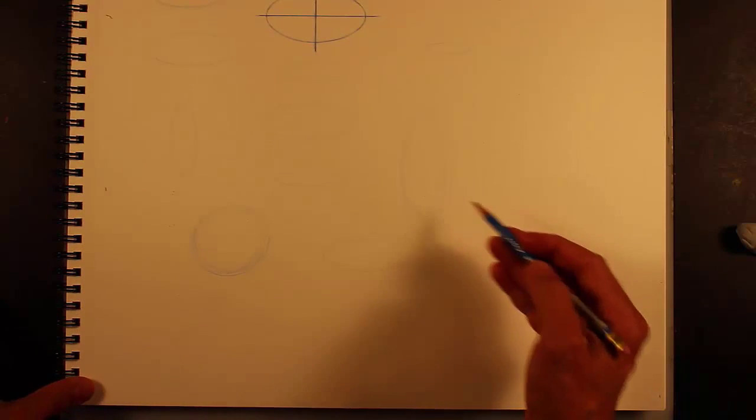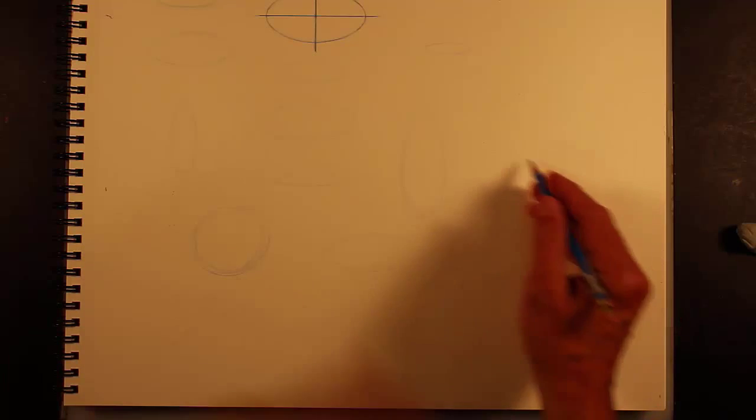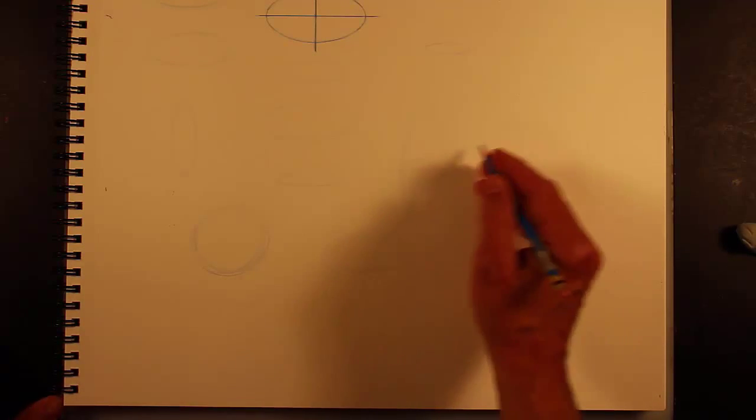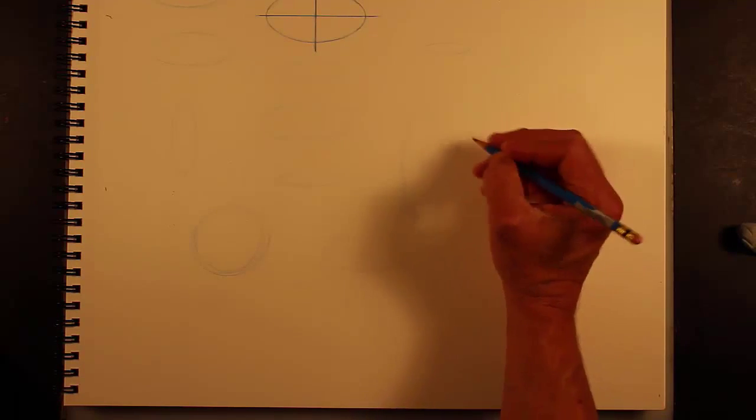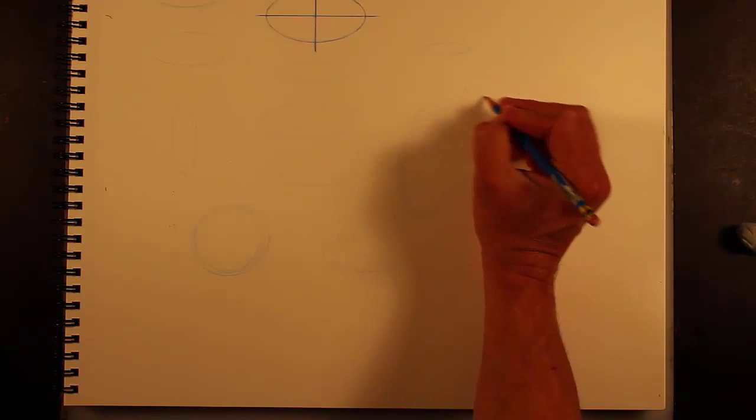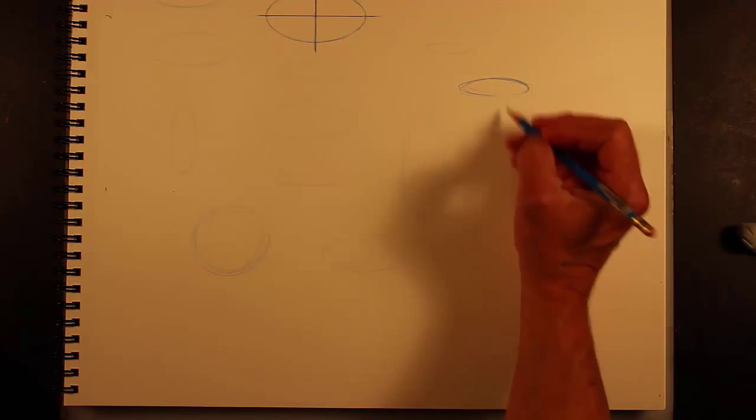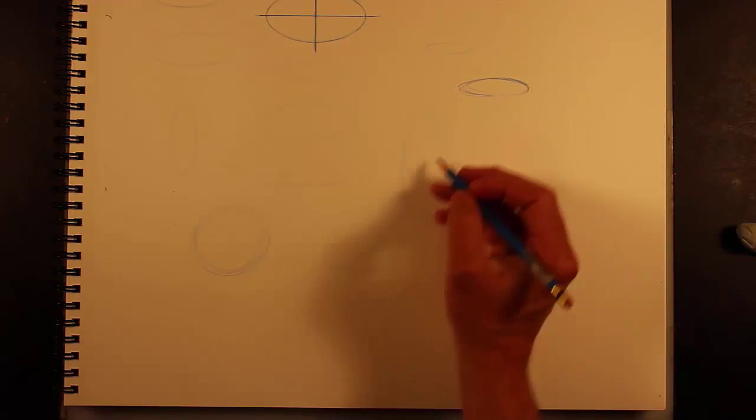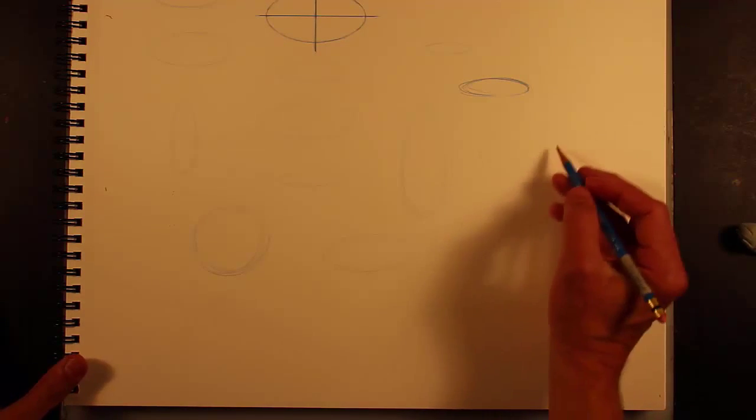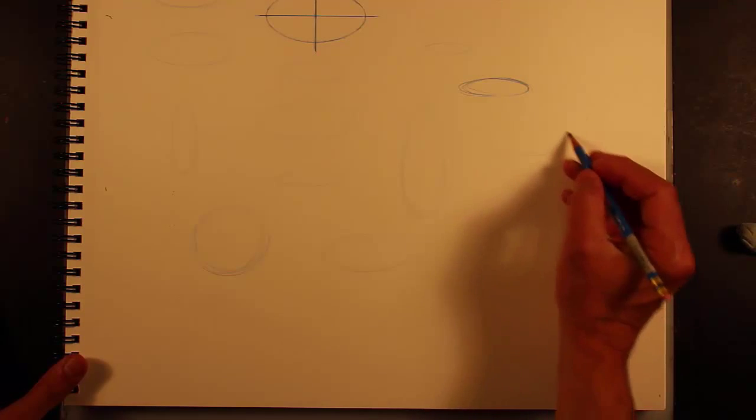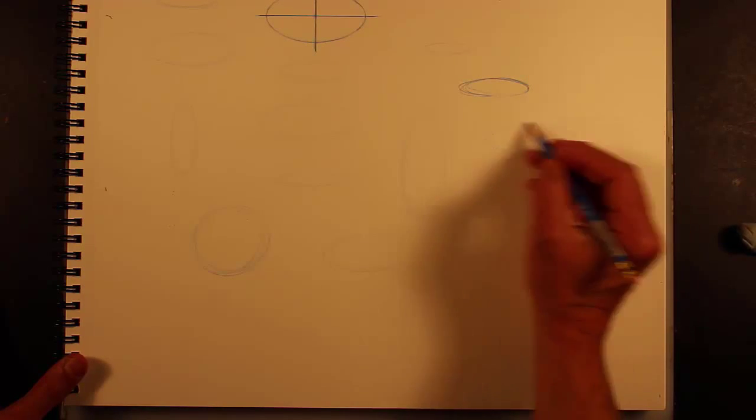And the way that you draw a freehand ellipse is really from the shoulder. I'm not sitting here with my hand resting on it trying to do an ellipse like this. I could, but I'm really just using the whole swing of my arm. I'm standing up and I'm using my whole shoulder to really get a swing back and forth. And I only do it like eight times.